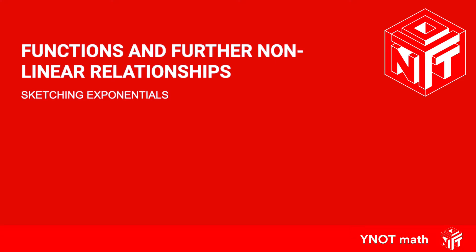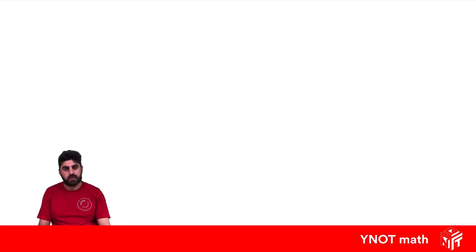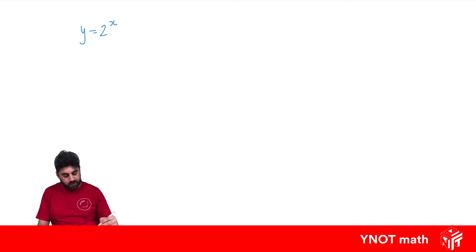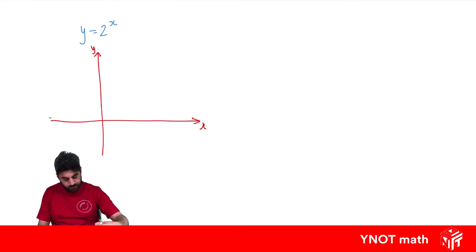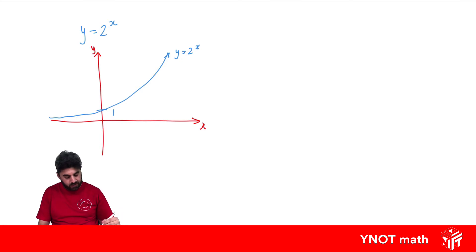Sketching exponentials: an exponential function is where your power is actually a variable, so something like y equals 2 to the power of x. To sketch this, it goes through 1 on the y-axis. To find your y-intercept, make x equal to zero — 2 to the power of zero is 1, so that's why it goes through 1.